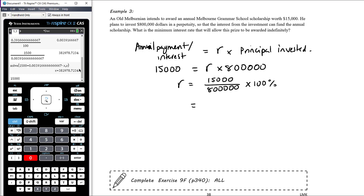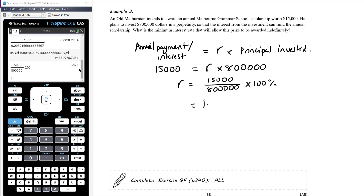We're working out what percentage $15,000 is of $800,000: $15,000 divided by $800,000, then times by 100 to make it a percent. Using CAS, that gives 1.875% as the interest rate needed on that perpetuity. That means every year it earns $15,000 in interest, which we can withdraw and donate to the scholarship fund, while the investment still remains worth $800,000 in perpetuity.